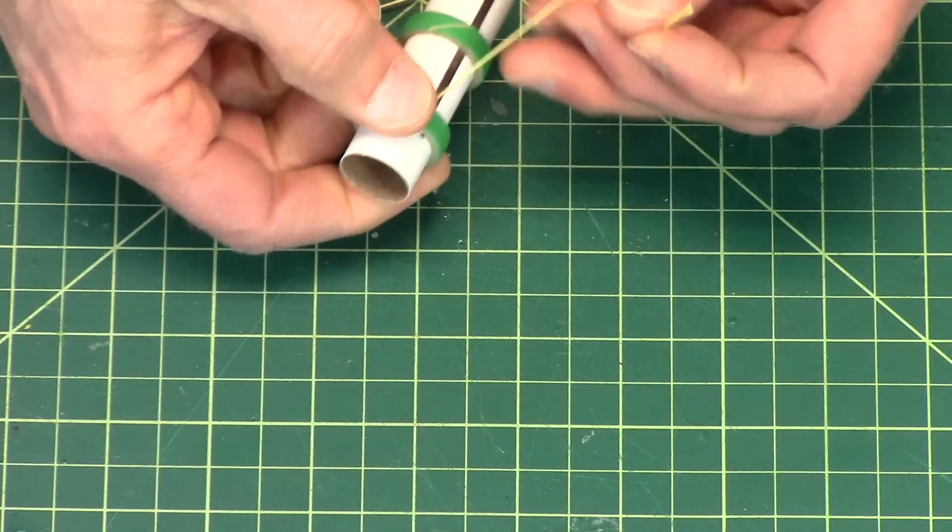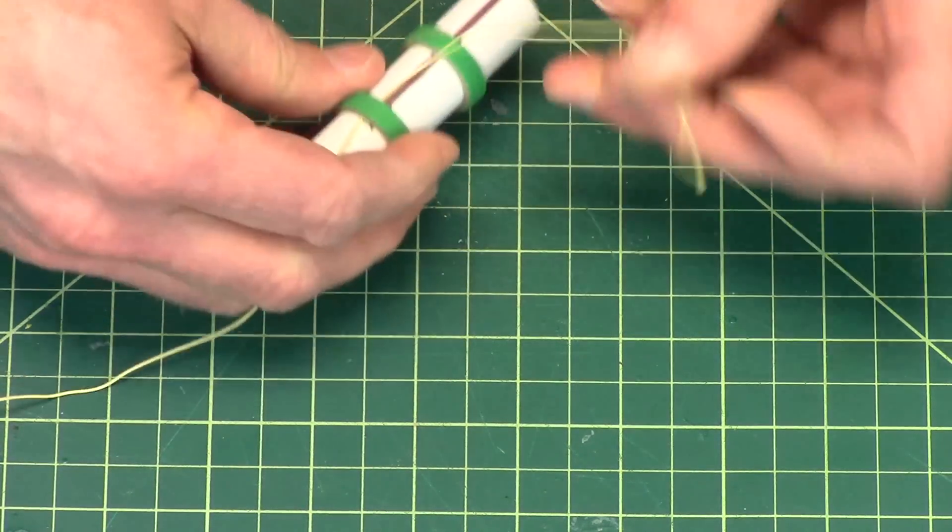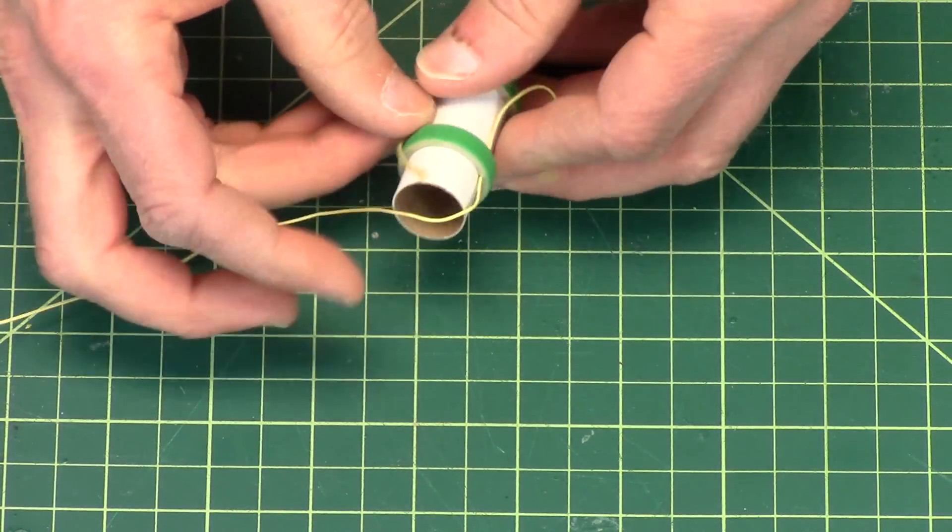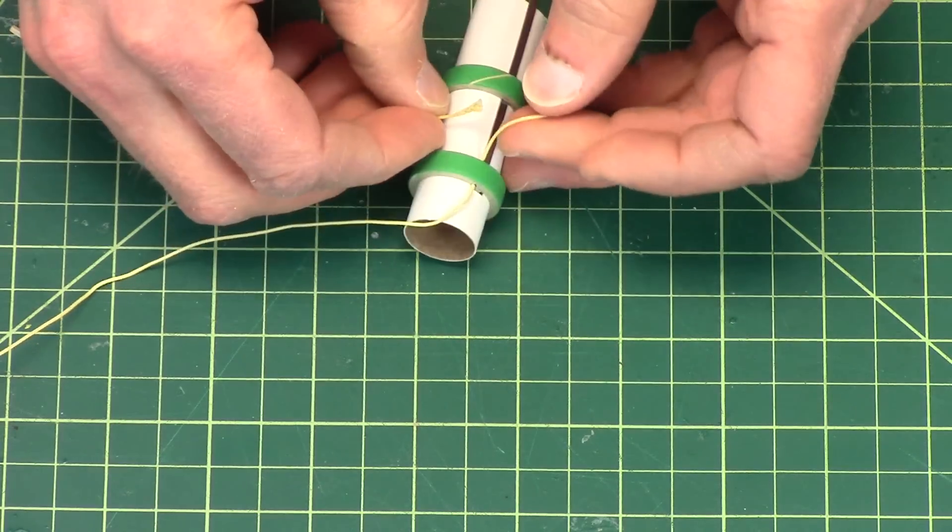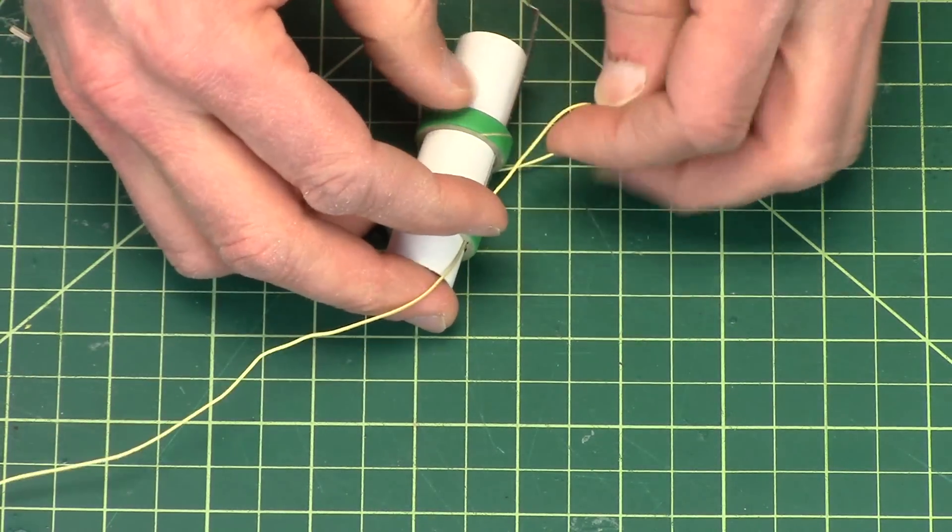And what I'll do is I'll wrap the shock cord around the tube. And then I want to tie these together. And I like to make a slip knot.